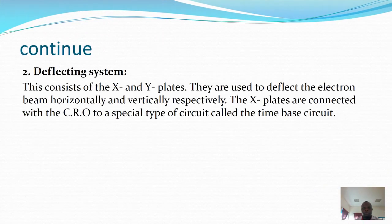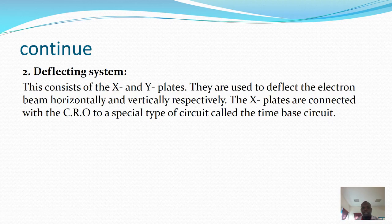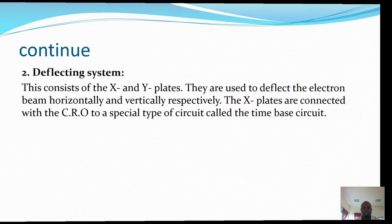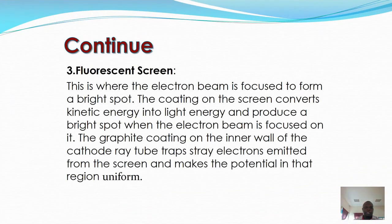The second part of the CRO is the deflecting system. This consists of X and Y plates, which are used to deflect the electron beam horizontally and vertically respectively. The X plates are connected to a special type of circuit called a time base circuit, which is an important component of the deflecting system.